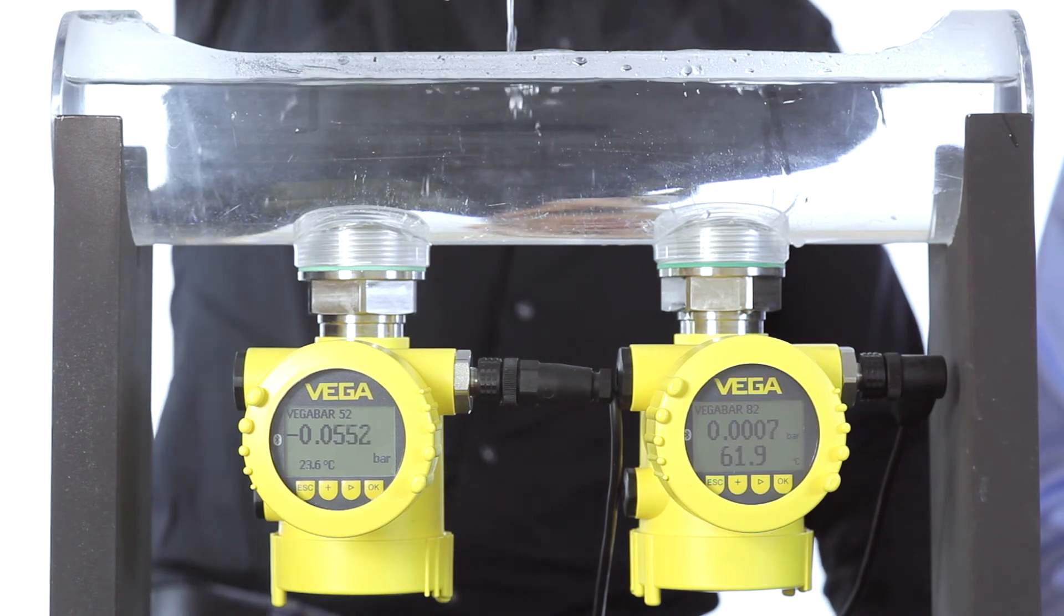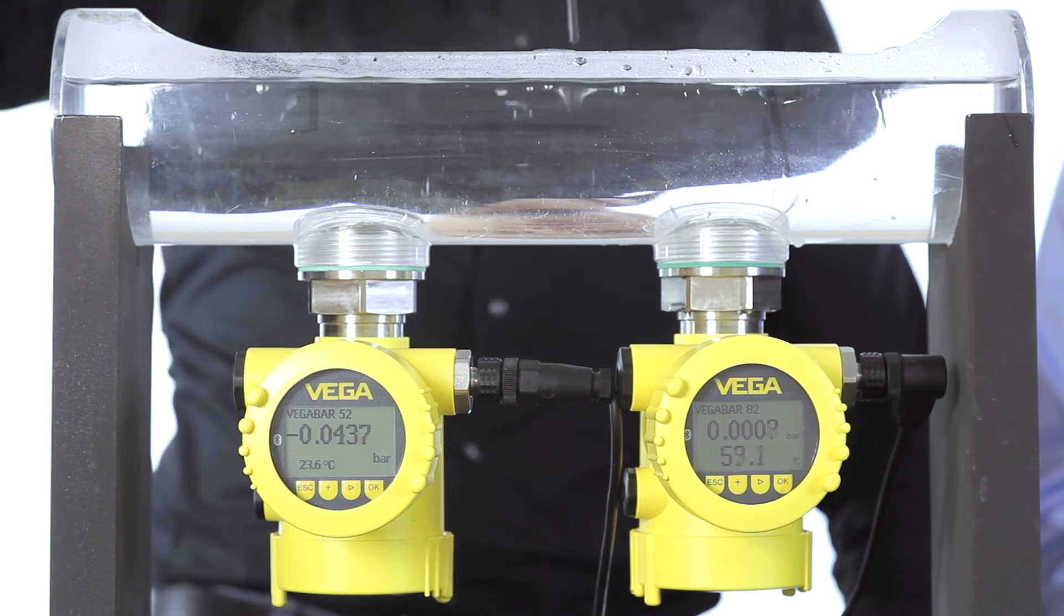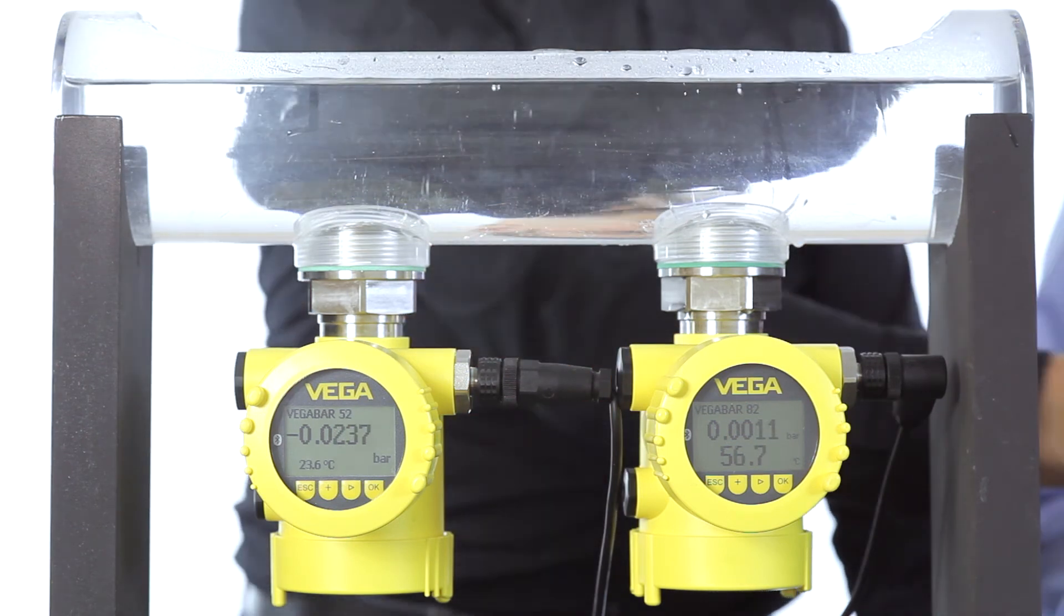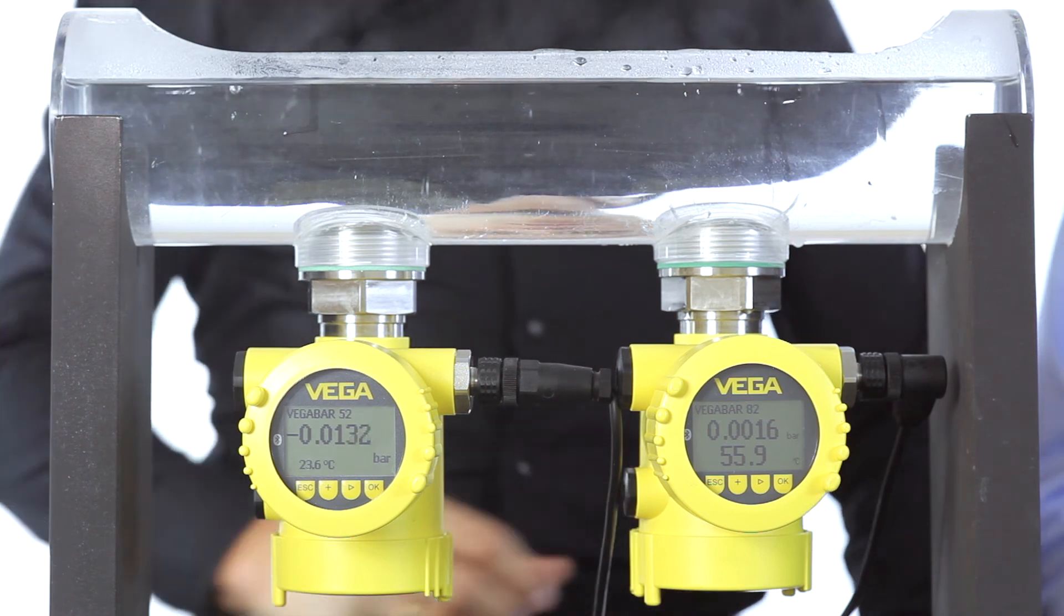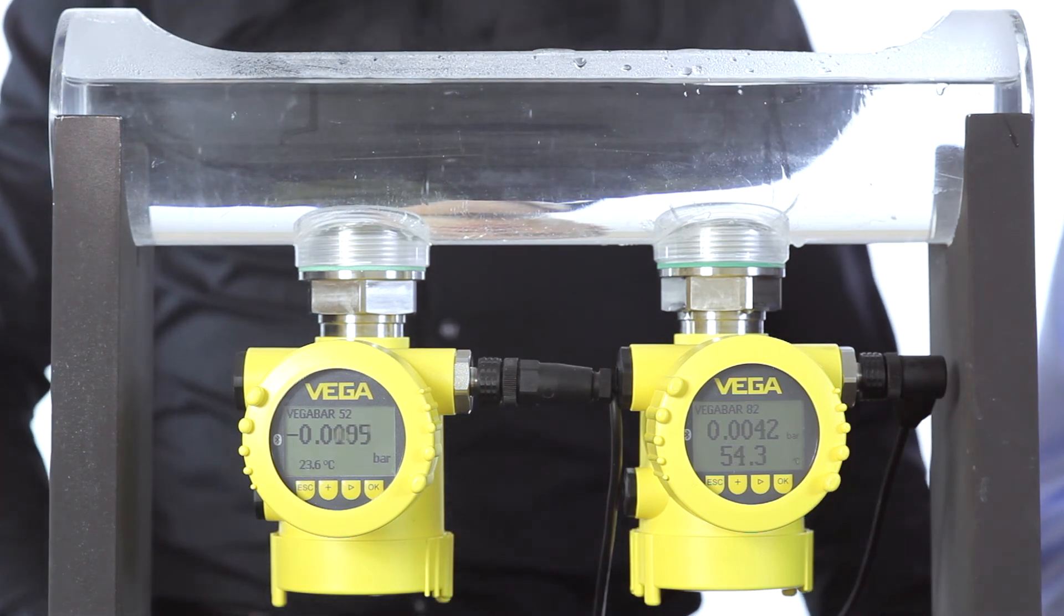Now we fill in the hot water. And we can see directly that on the left side, the Vega Bar 52 is showing a minus level.